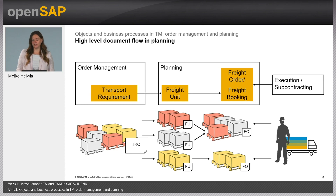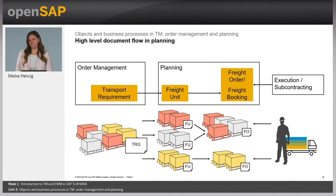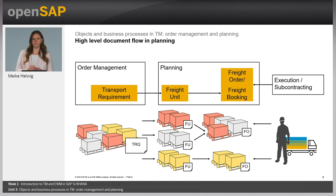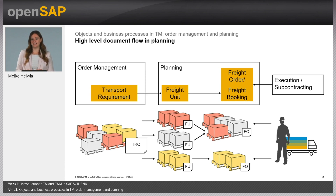A freight unit is the smallest unit which is always transported together from A to B at the same dates and times. It's the package which always stays together and cannot be separated through the process. It could be a handling unit, it could be a delivery, it could be only a single item. This is up to your business needs and what you want to achieve in the planning process. Do you want to optimize to the end? If you have smaller units, of course, you can build better trucks together — you can really put things together in the truck in the best way. But if you have bigger portions, this is not possible.